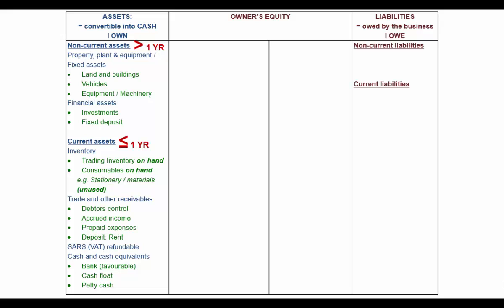Liabilities are also split into non-current and current liabilities. A liability is something that we owe. A non-current liability is something we owe that we are not going to pay back within the next financial year — we're going to pay it back in more than one year's time. Current liability is what we owe and will pay or settle within the next financial year. Examples of non-current liabilities include mortgage bonds and long-term loans — the portion of those loans payable after a year.